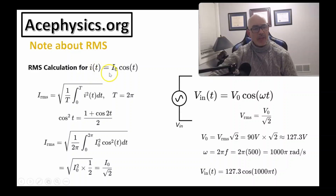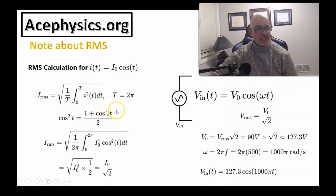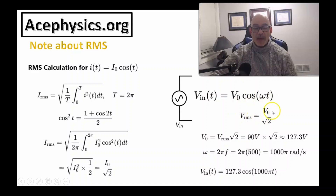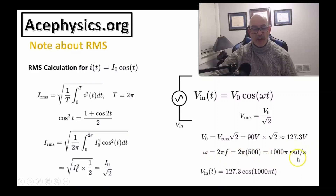For example, for a current I_0 cosine(t), we square the function and take the average over one period using a calculus integral from 0 to 2·pi. For any sine or cosine function, the RMS value equals the amplitude divided by the square root of 2. So if the input voltage is V_0 cosine(omega·t), then V_RMS = V_0 / sqrt(2). In this problem, V_RMS is 90 volts, so V_0 = 90·sqrt(2) = 127.3 volts. With omega = 2·pi·f = 1000·pi rad/s, the input voltage is 127.3·cos(1000·pi·t).